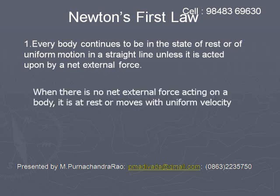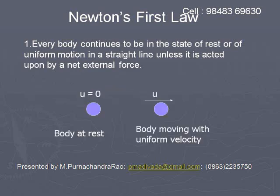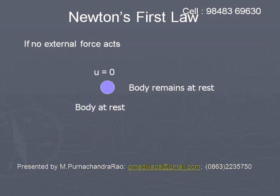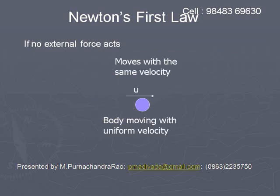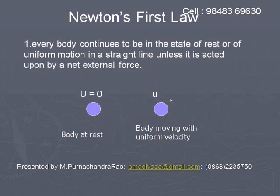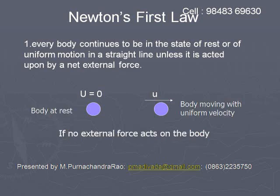When there is no external force acting on a body, the body will be in the state of rest or of uniform motion. In the figures, I have shown u is equal to zero, that means the body is at rest. In the second figure, u is given with a vector — it is a body moving with uniform velocity. So, a body at rest remains at rest, a body in uniform motion remains in uniform motion, if no external force acts on the body. This is the statement of the first law.